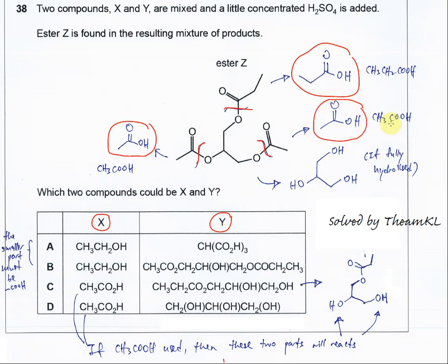From here we know that after all these ester bonds hydrolyze, the smaller molecule must be the carboxylic acid. So A and B is out. It must be the carboxylic acid, so answer is just C or D. Both are ethanoic acid.